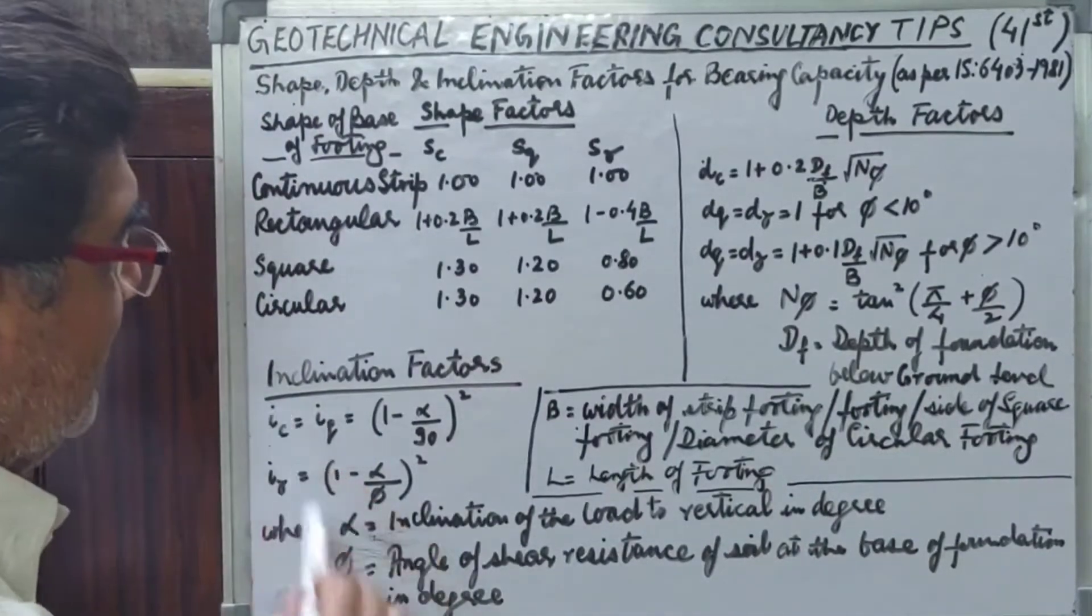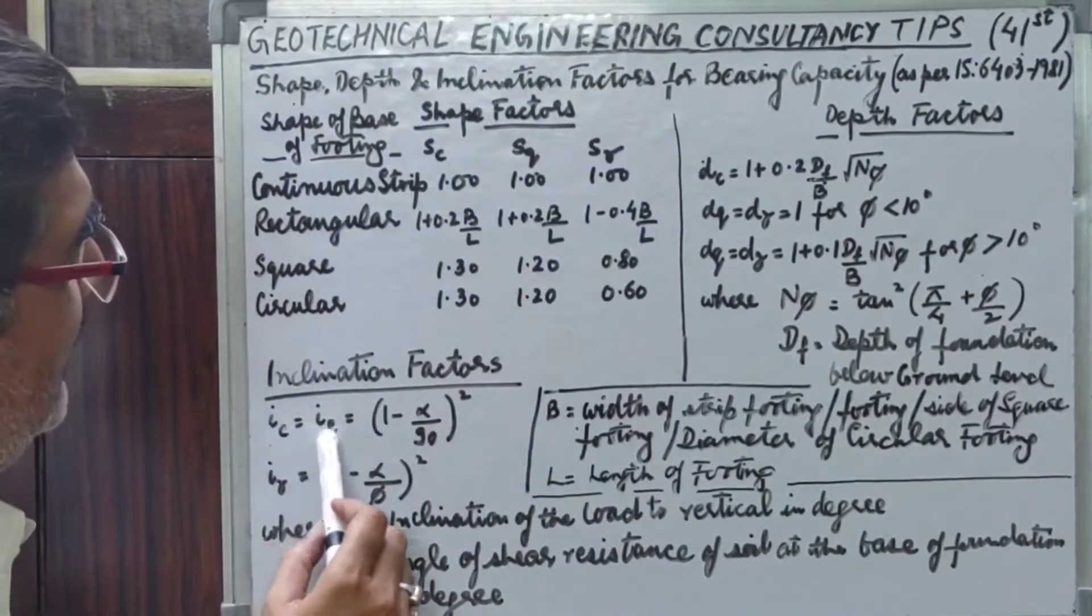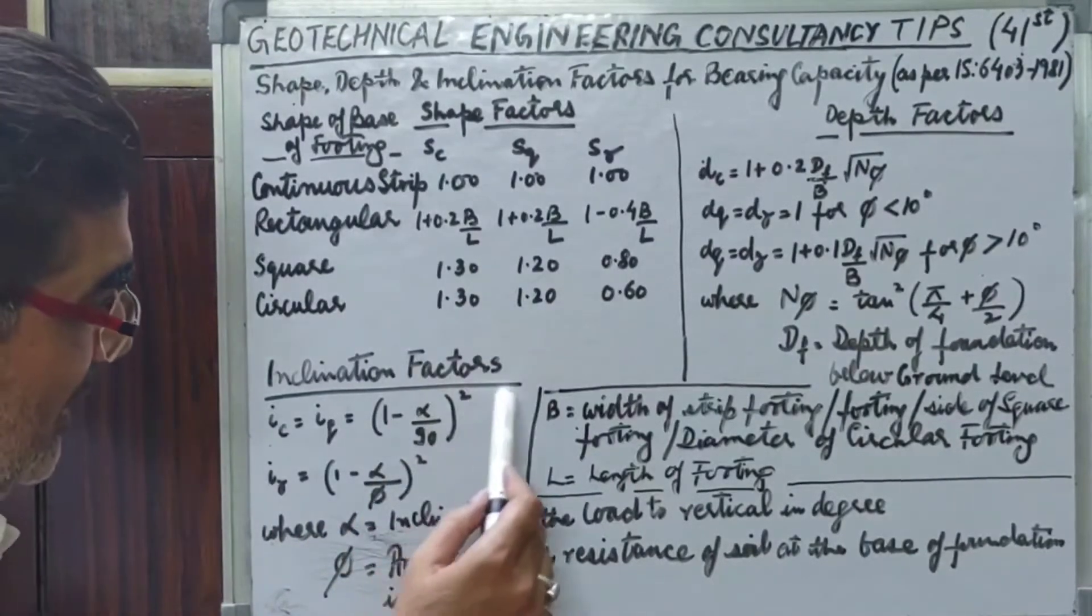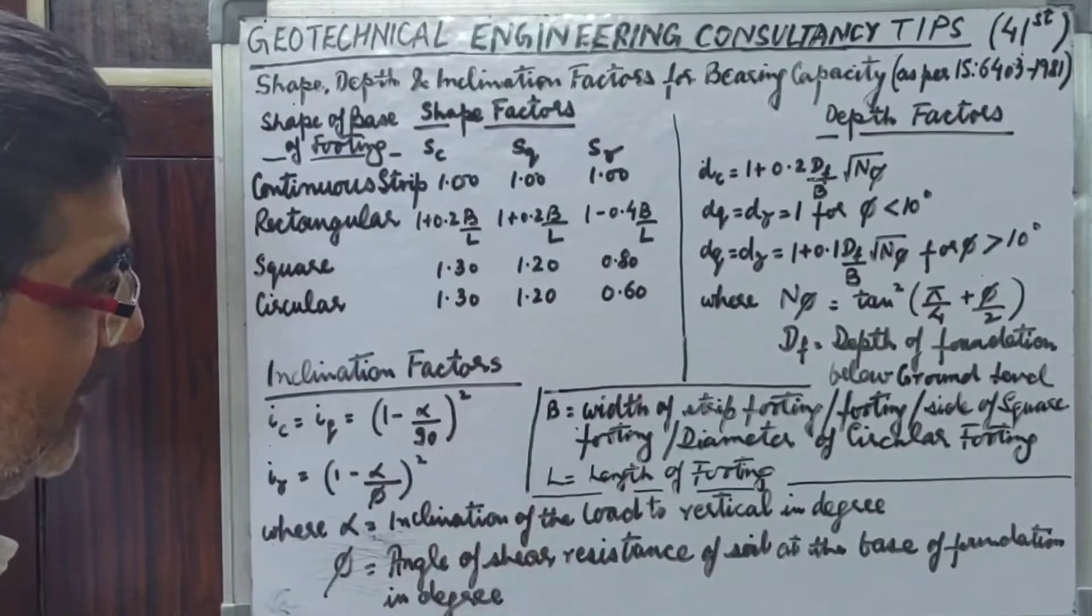Now inclination factors: Ic is equal to Iq is equal to 1 minus alpha upon 90 the whole square. If our foundation is strictly perpendicular to the base, then Ic is equal to Iq is equal to 1.